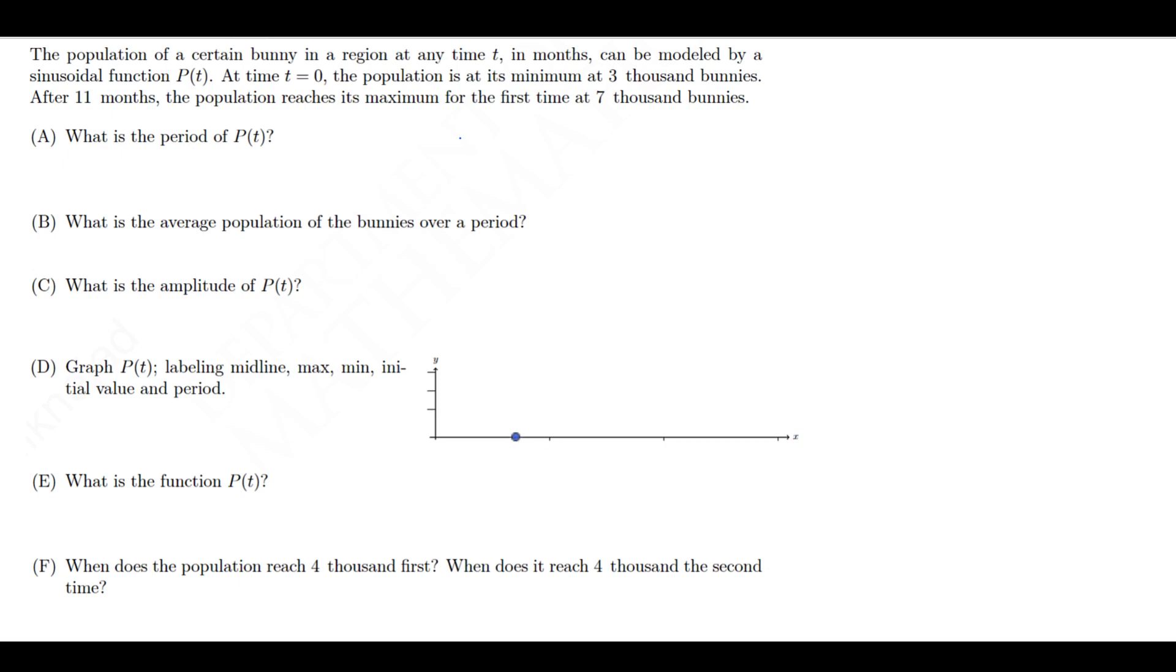The population of a certain bunny in a region at any time t in months can be modeled by a sinusoidal function. A sinusoidal function is either sine or cosine, and it can have a phase shift, it can have different periods, and so on and so forth.